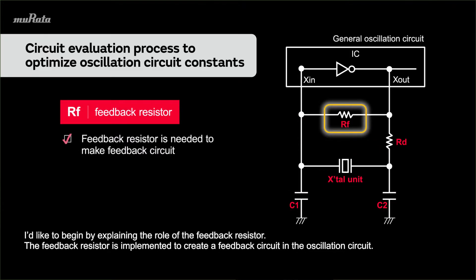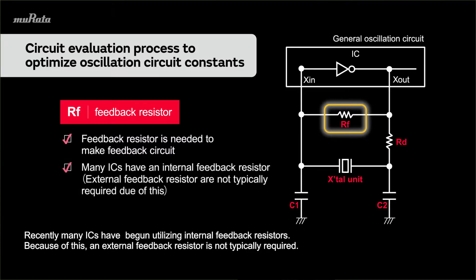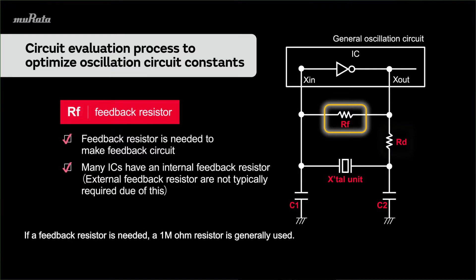I'd like to begin by explaining the role of the feedback resistor. The feedback resistor is implemented to create a feedback circuit in the oscillation circuit. Recently, many ICs have begun utilizing internal feedback resistors. Because of this, an external feedback resistor is not typically required. If a feedback resistor is needed, a 1 megaohm resistor is generally used.